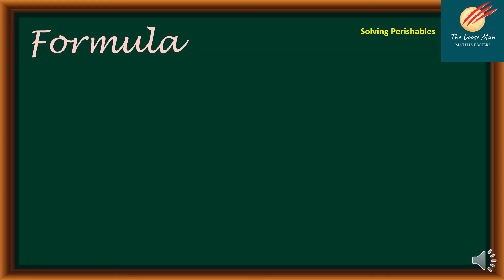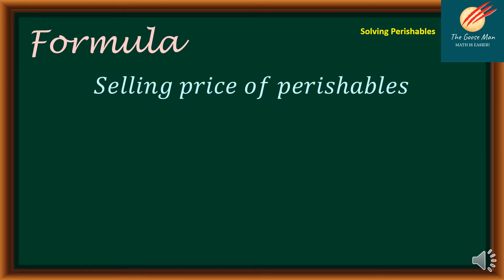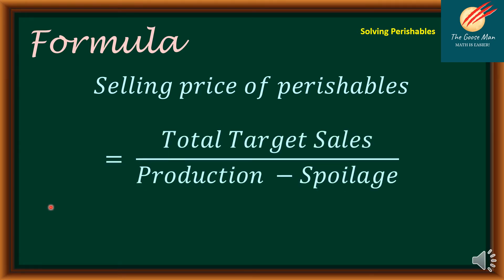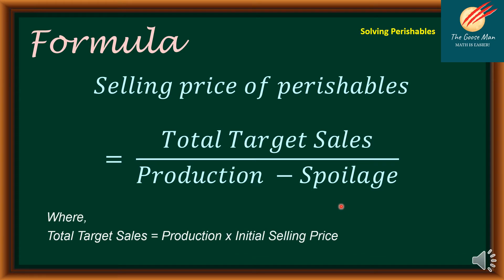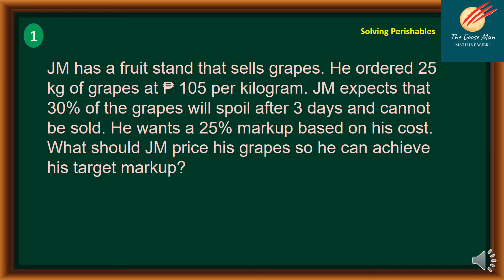For the formula we will use here, the selling price of perishables is equal to the quotient of total target sales over production minus spoilage. Production is the number of items you need to produce, while spoilage is the amount you can no longer sell. Your total target sales can be computed as production times the initial selling price.